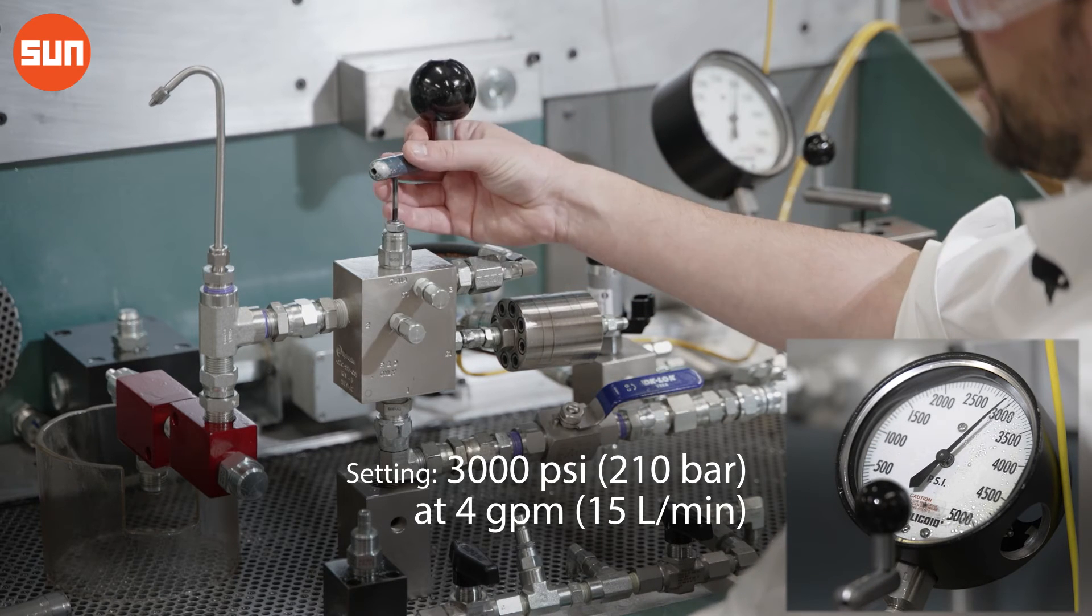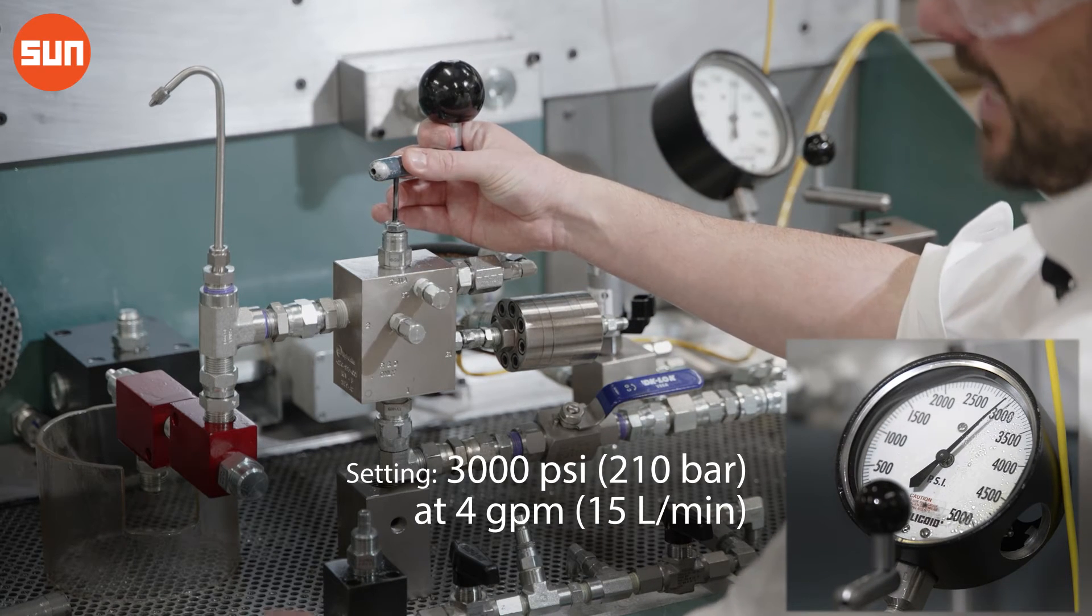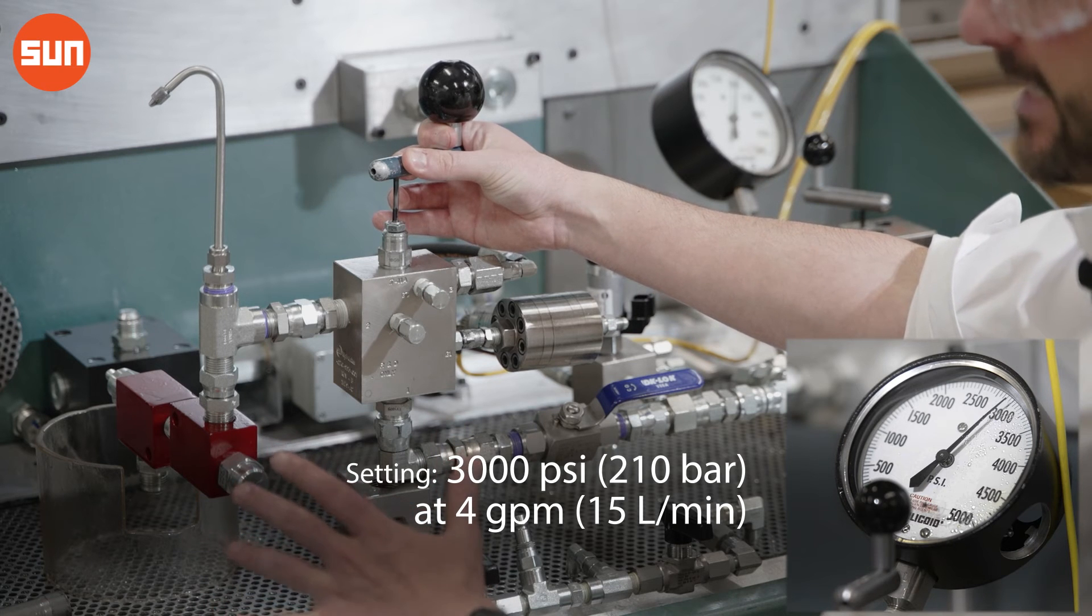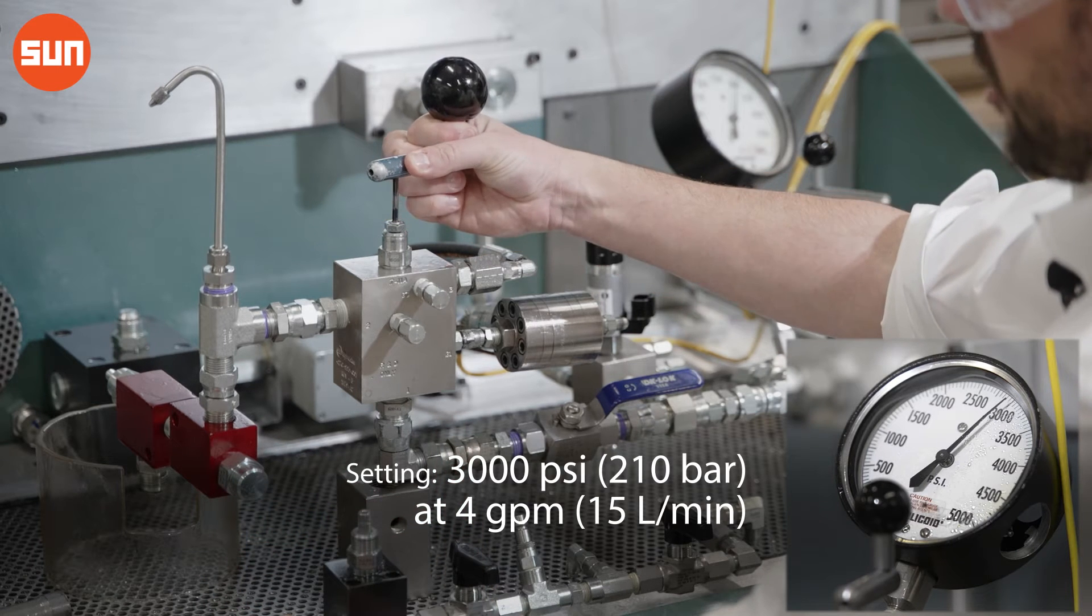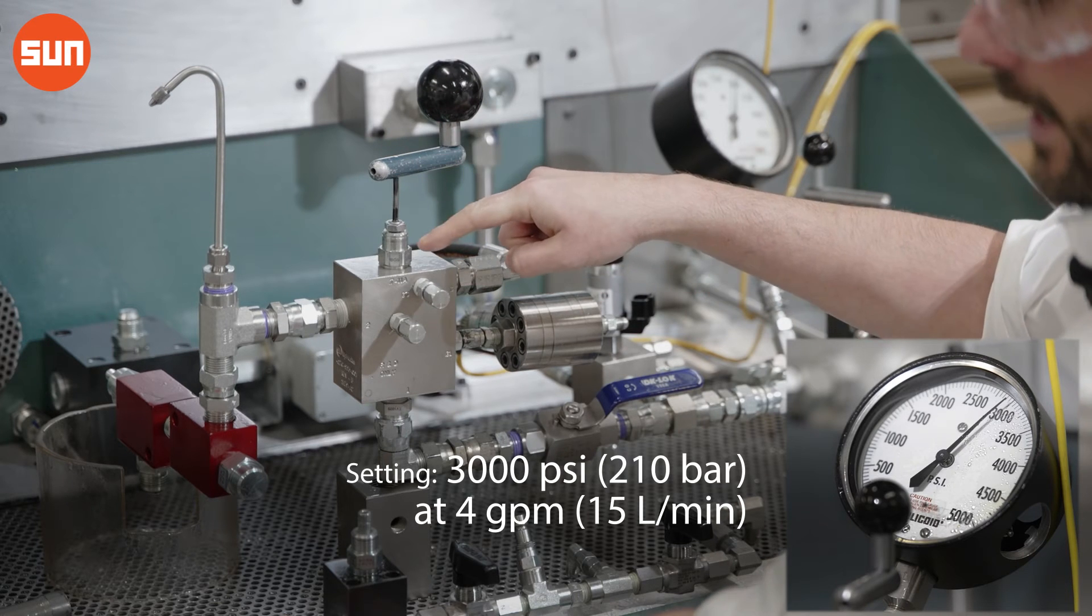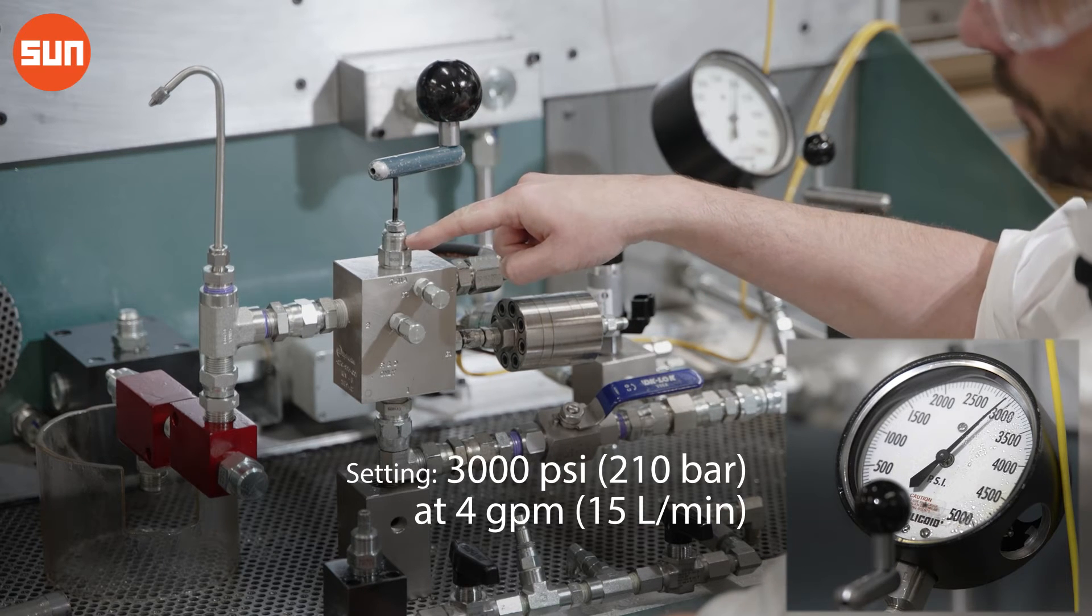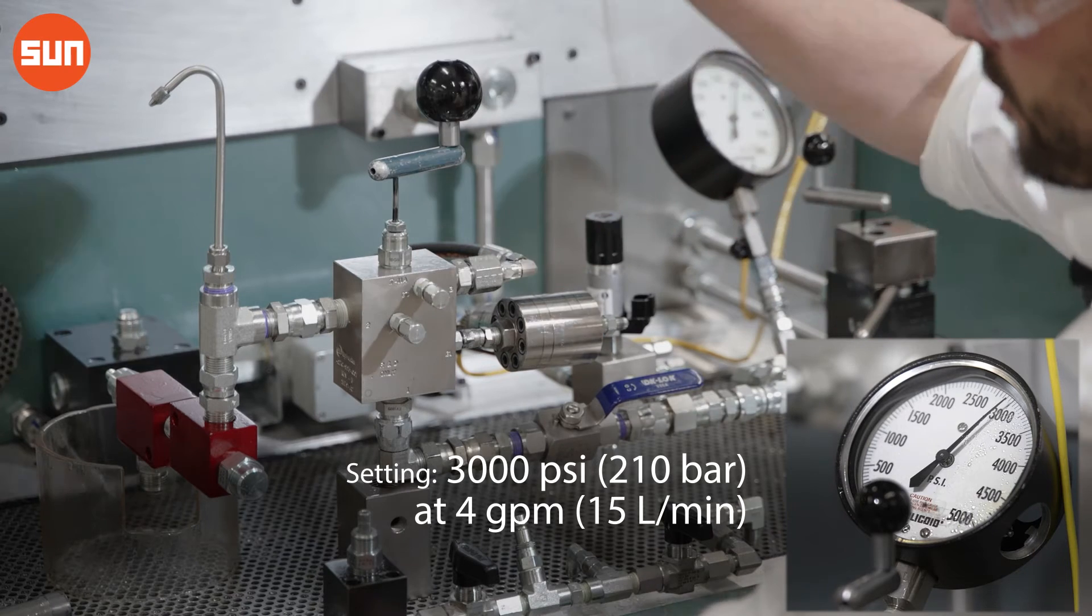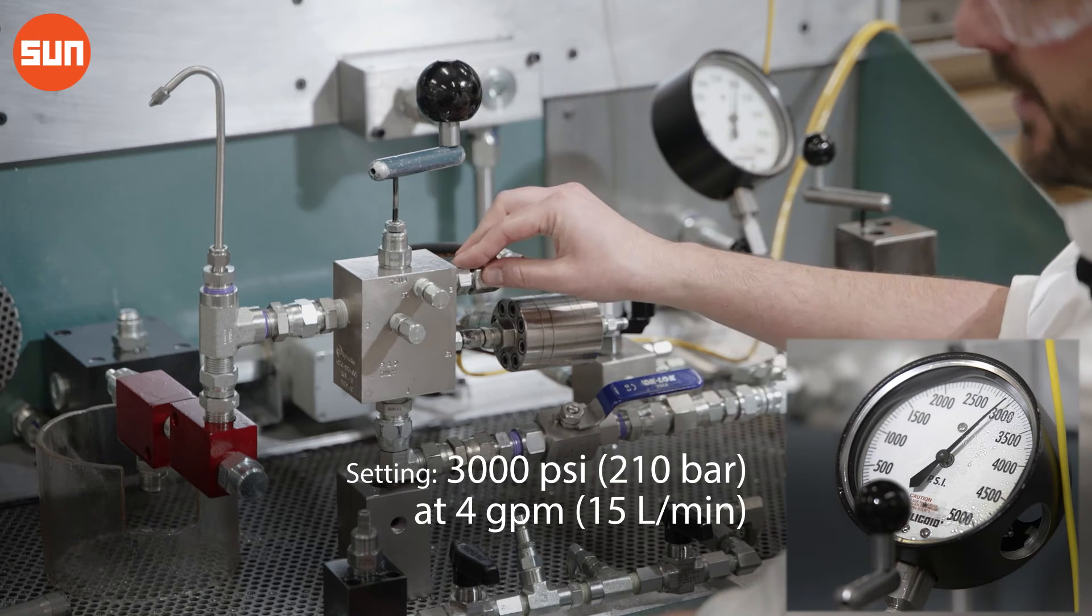Now we are going to slowly adjust the counterbalance valve down to its approximate set point, which means we're going to turn our adjust screw counterclockwise. We know that between three and three quarters and four full turns is the adjustment range of the valve.